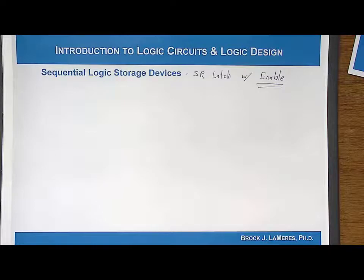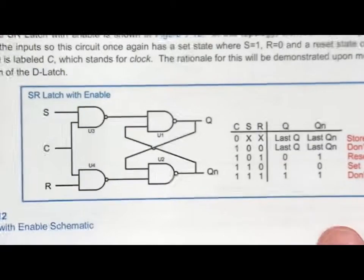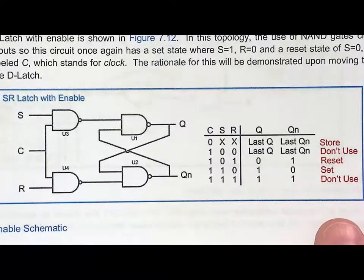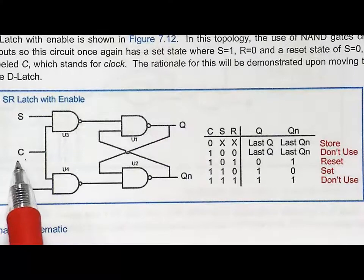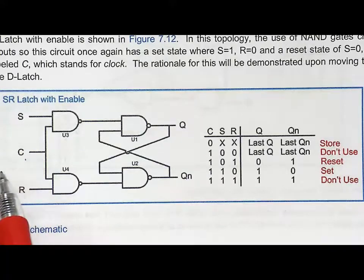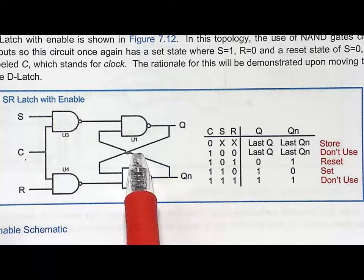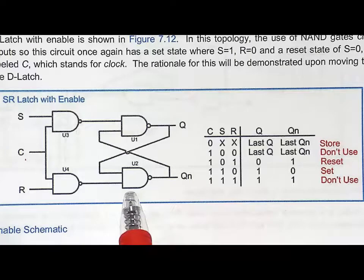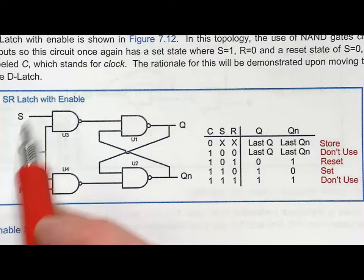This one becomes a little more complicated, but let's take a look at the final circuit. This is the SR Latch with Enable. We are going to introduce a new signal called C — and it's the clock. C is going to be the Enable line. Notice this inner portion is the S-bar R-bar Latch, and the outer portion is the Enable circuit, with our S and R inputs right here.